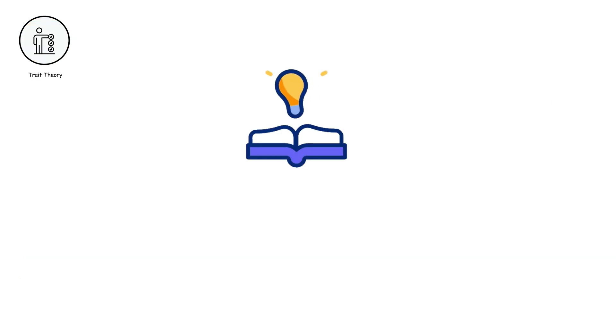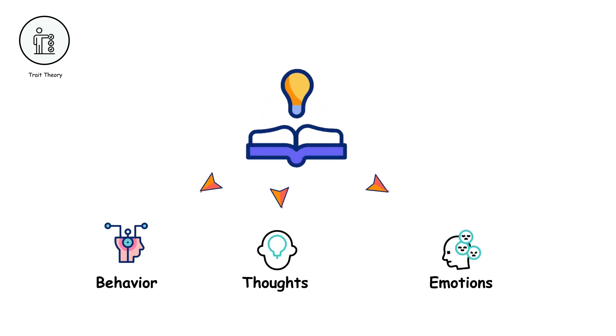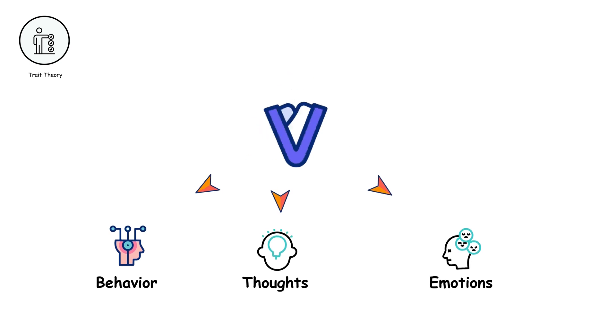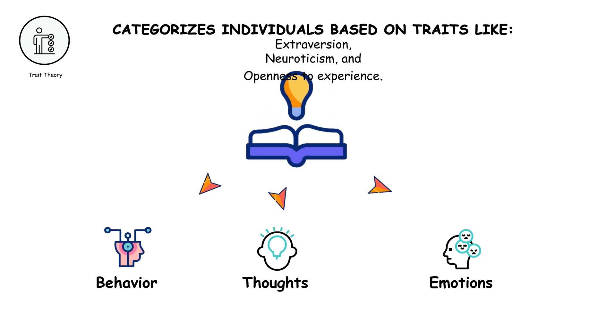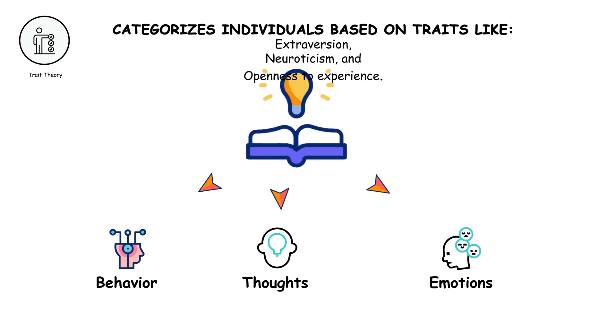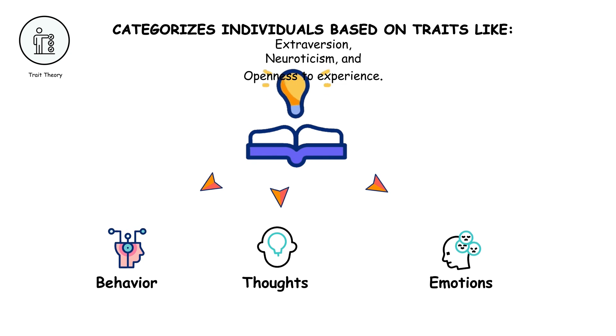Trait theory seeks to understand personality by identifying and measuring consistent patterns of behavior, thoughts, and emotions. It categorizes individuals based on traits like extroversion, neuroticism, and openness to experience.